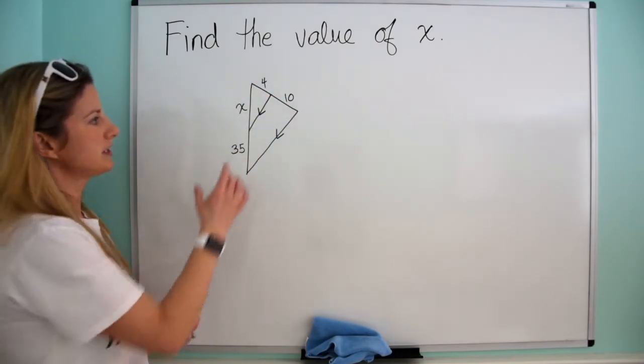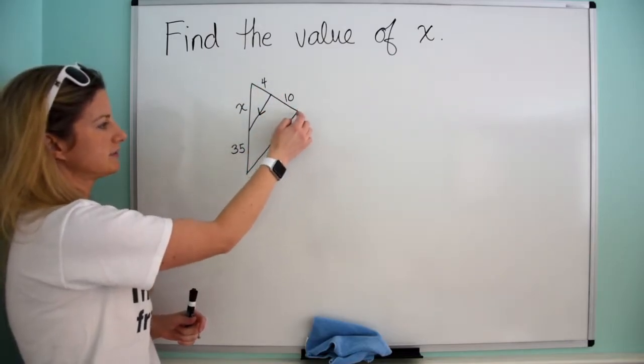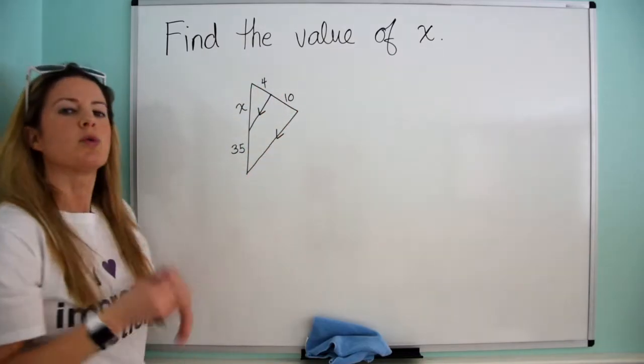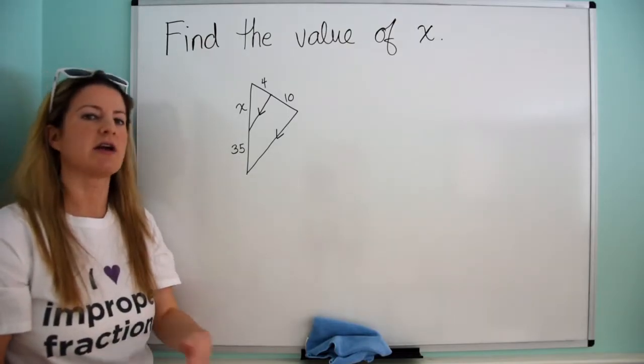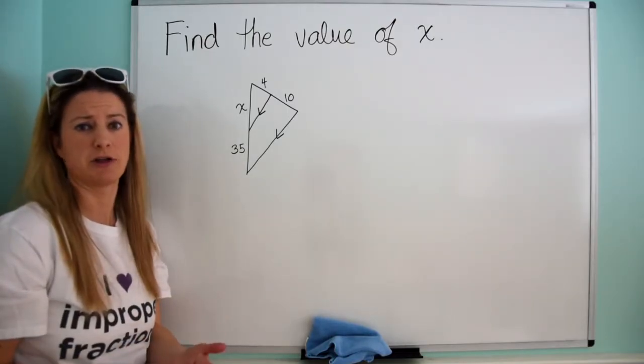The first thing we're going to notice here is we have this segment that's dividing these two sides, and it's parallel to this third side. So right then and there we're going to say, oh my gosh, I remember the triangle proportionality theorem or the side splitter theorem.